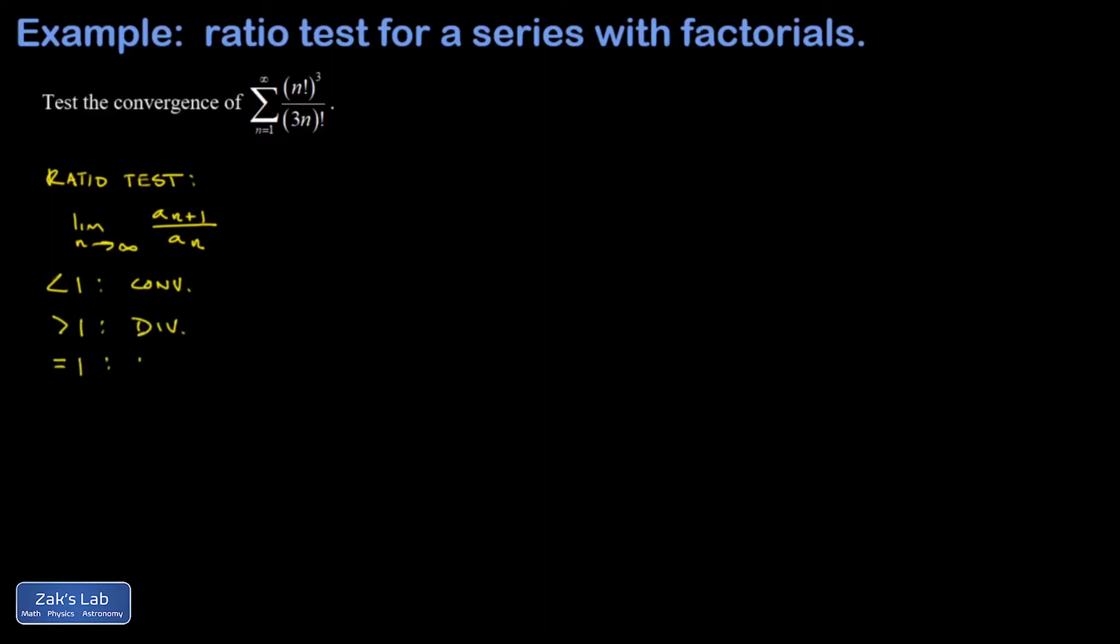So we set up our limit. The n plus one term is (n+1)! cubed over 3(n+1) factorial, and then divided by the original term a_n that I'm looking at in my original series. When I divide by that, it's the same as multiplying by the reciprocal, so I have 3n factorial divided by n factorial all cubed.